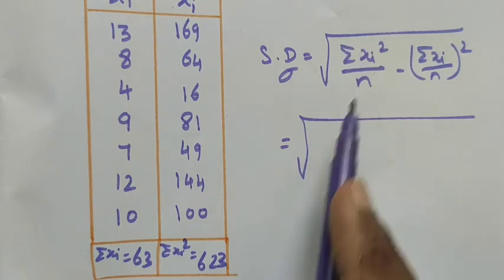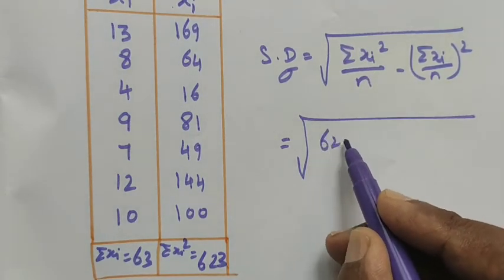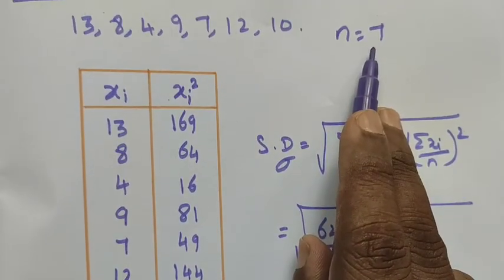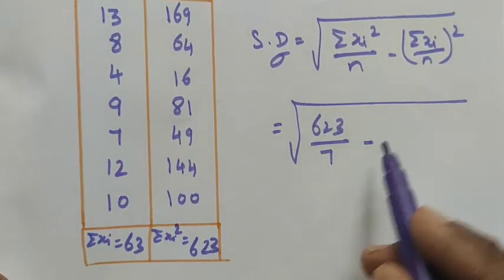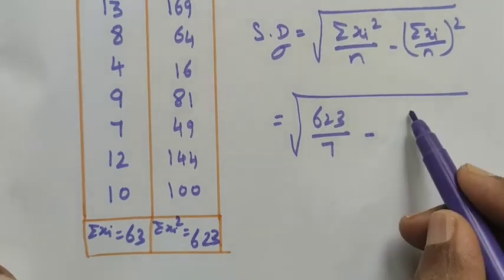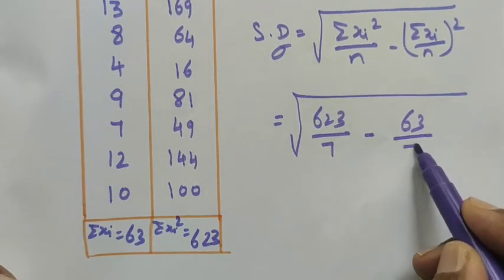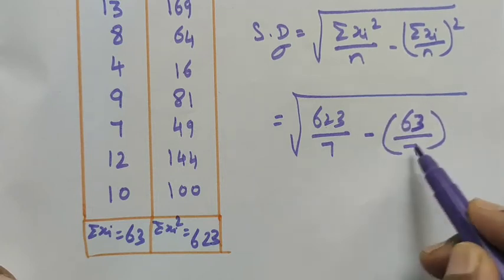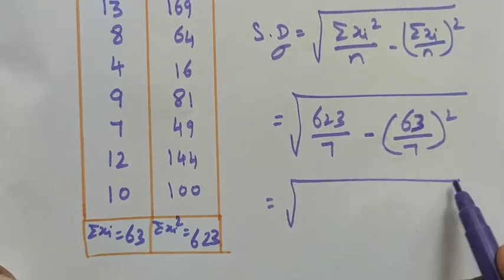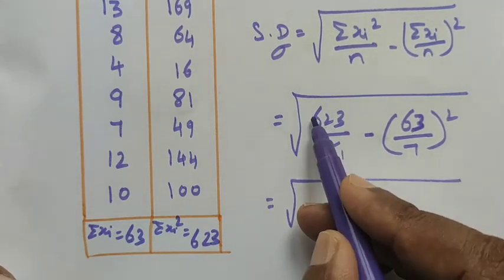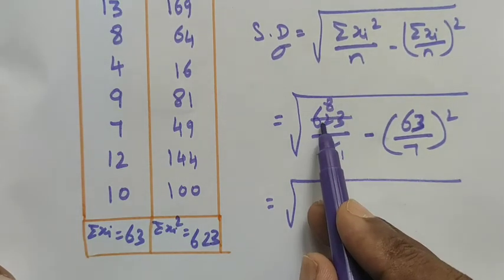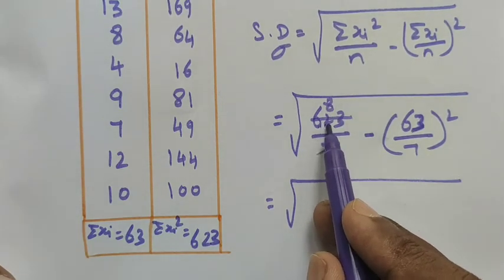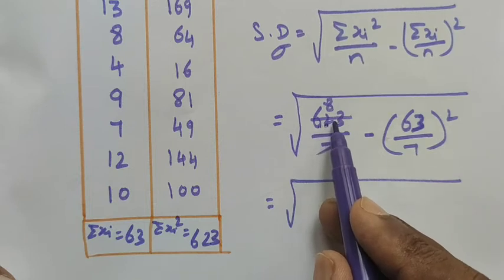So 623 is the summation of xi square. Now here we apply the values. In the place of summation xi square is 623 divided by n equals 7, minus summation xi is 63 divided by 7 whole square. Now reduce this: 7 ones are 7, 8s are 56, plus 7, 8s are 56, so 63 minus 56 is 6, then 63.